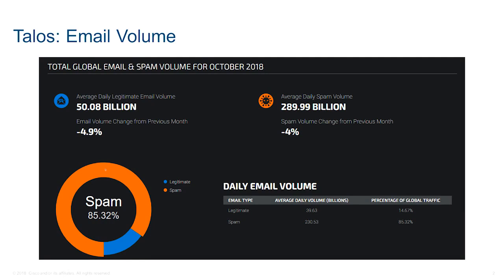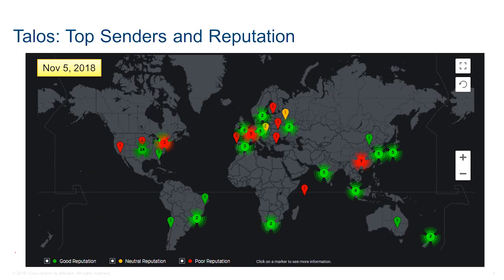Talos not only gives us retrospective analysis like those statistics, but they also track in real time what's happening around the world. That screenshot was taken the morning of November 5th, and on that morning Talos was tracking, by IP address across different locations, who had good reputation as senders, who had average or neutral reputation as senders, and who was known for a fact to have a bad reputation.